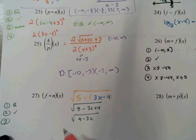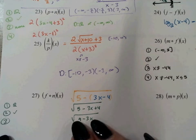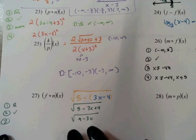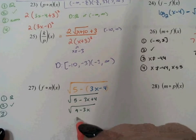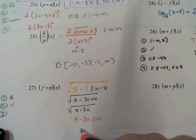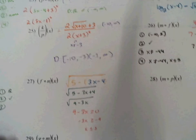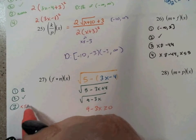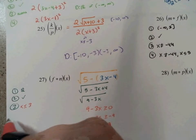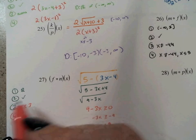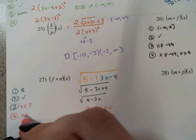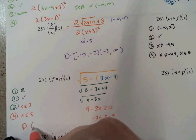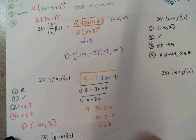Step 3: look for new domain issues. I have a square root, so I set the interior greater than or equal to 0: 9 minus 3x is greater than or equal to 0. That gives negative 3x greater than or equal to negative 9, so x must be less than or equal to 3. Step 4: combine — x must be less than or equal to 3, giving a domain of negative infinity to 3.